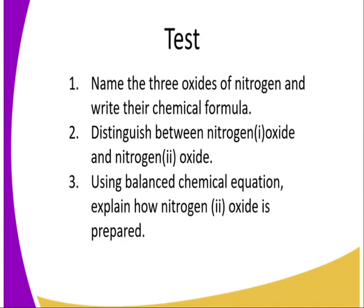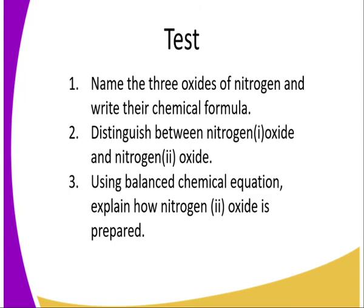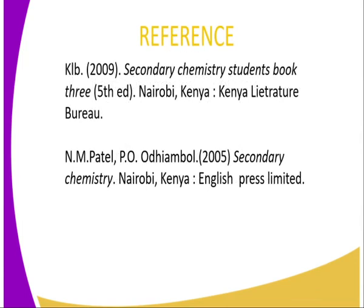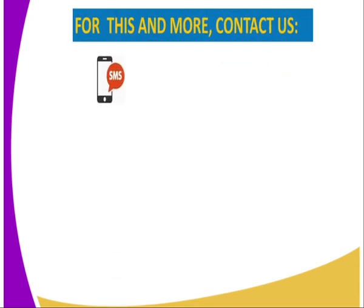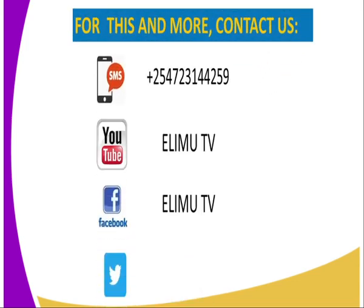Let's test your understanding with these questions: Name the three oxides of nitrogen and list their chemical formulae. Distinguish between nitrogen(II) oxide and nitrogen(IV) oxide. Using a balanced chemical equation, explain how nitrogen(II) oxide is prepared in the laboratory. You can refer to the Chemistry Students Book 3, visit our YouTube channel at the numbers shown on screen, or visit our Facebook page at Elimu TV underscore KE. I'm your tutor Mr. Mwangi Francis — stay tuned for more lessons.